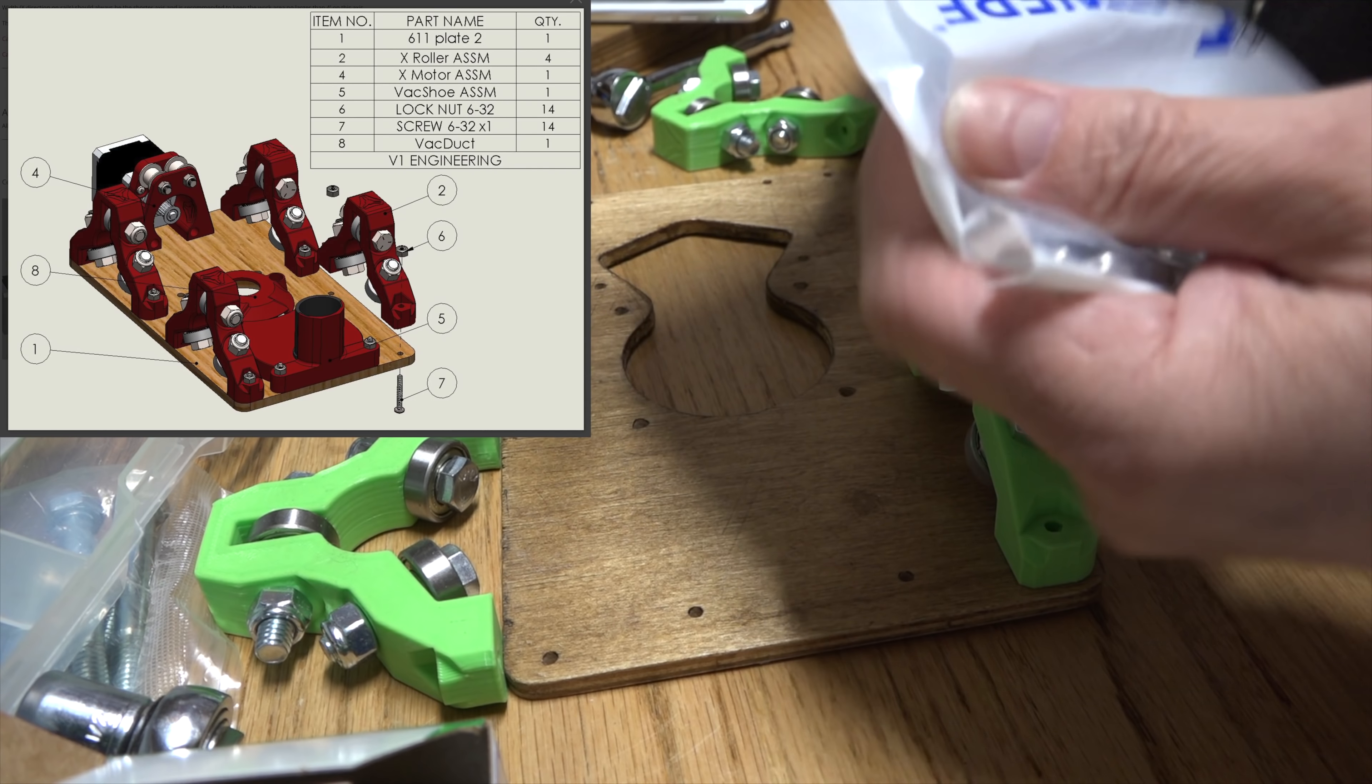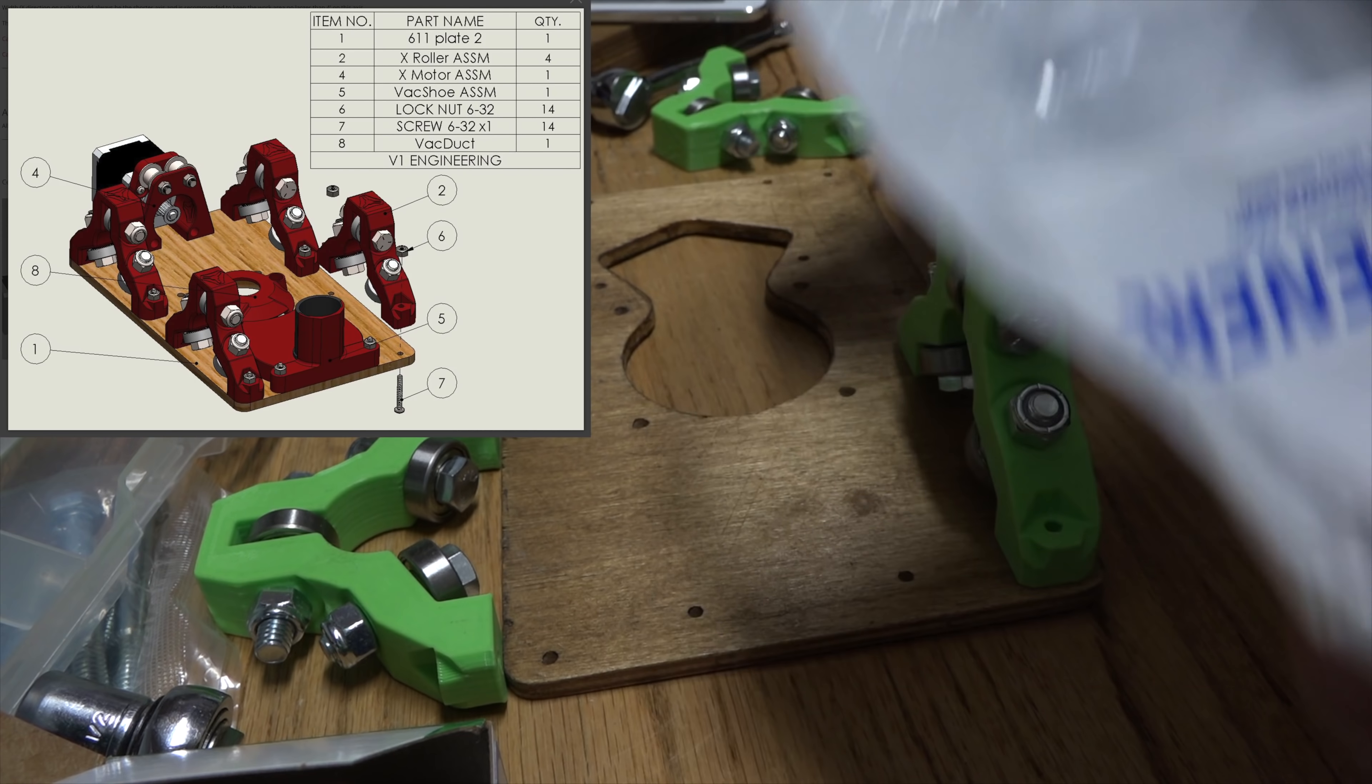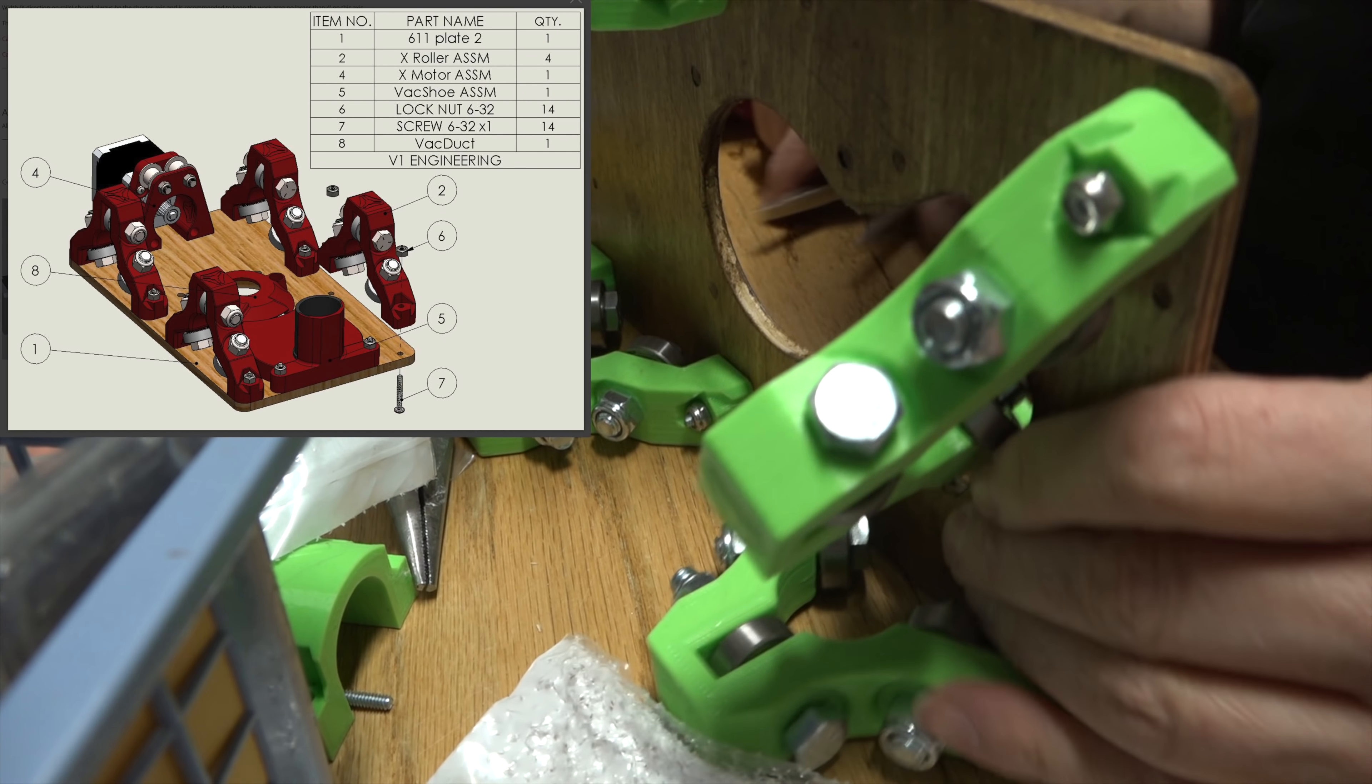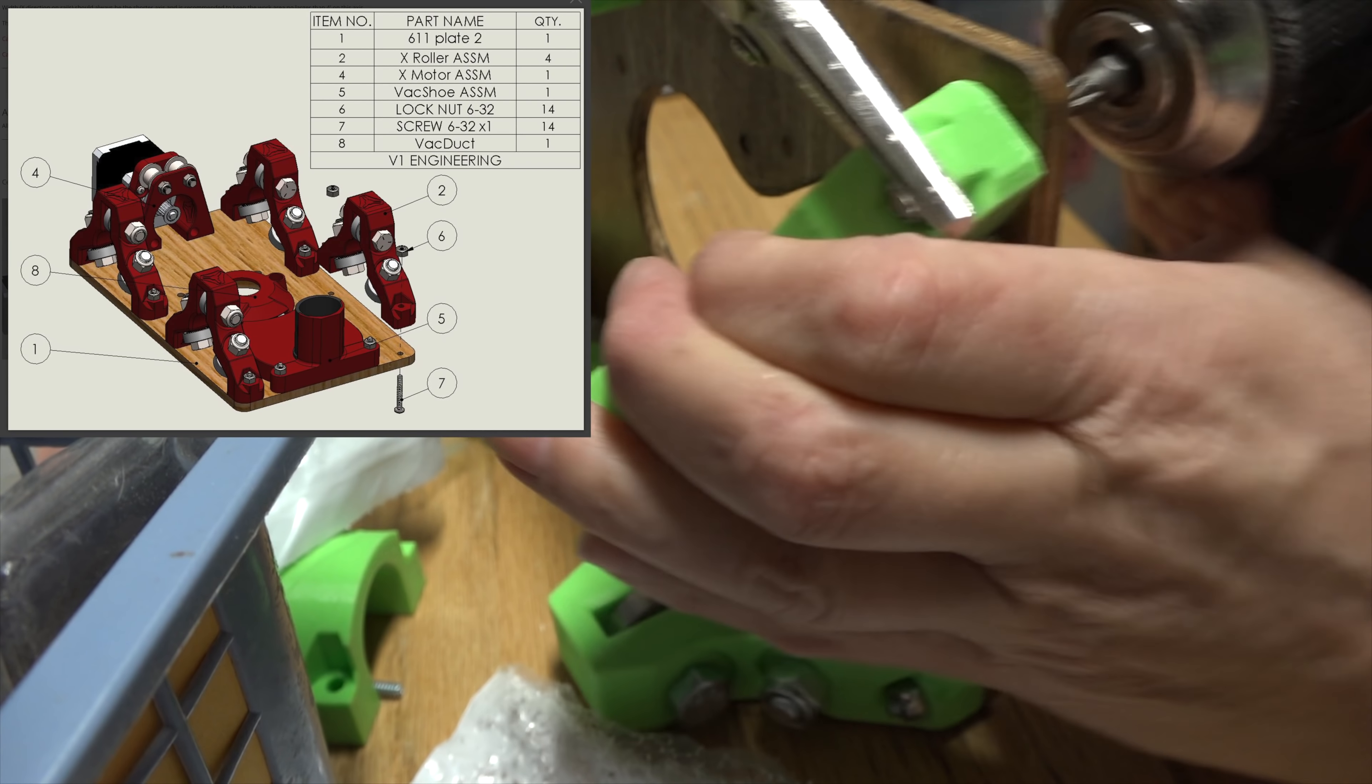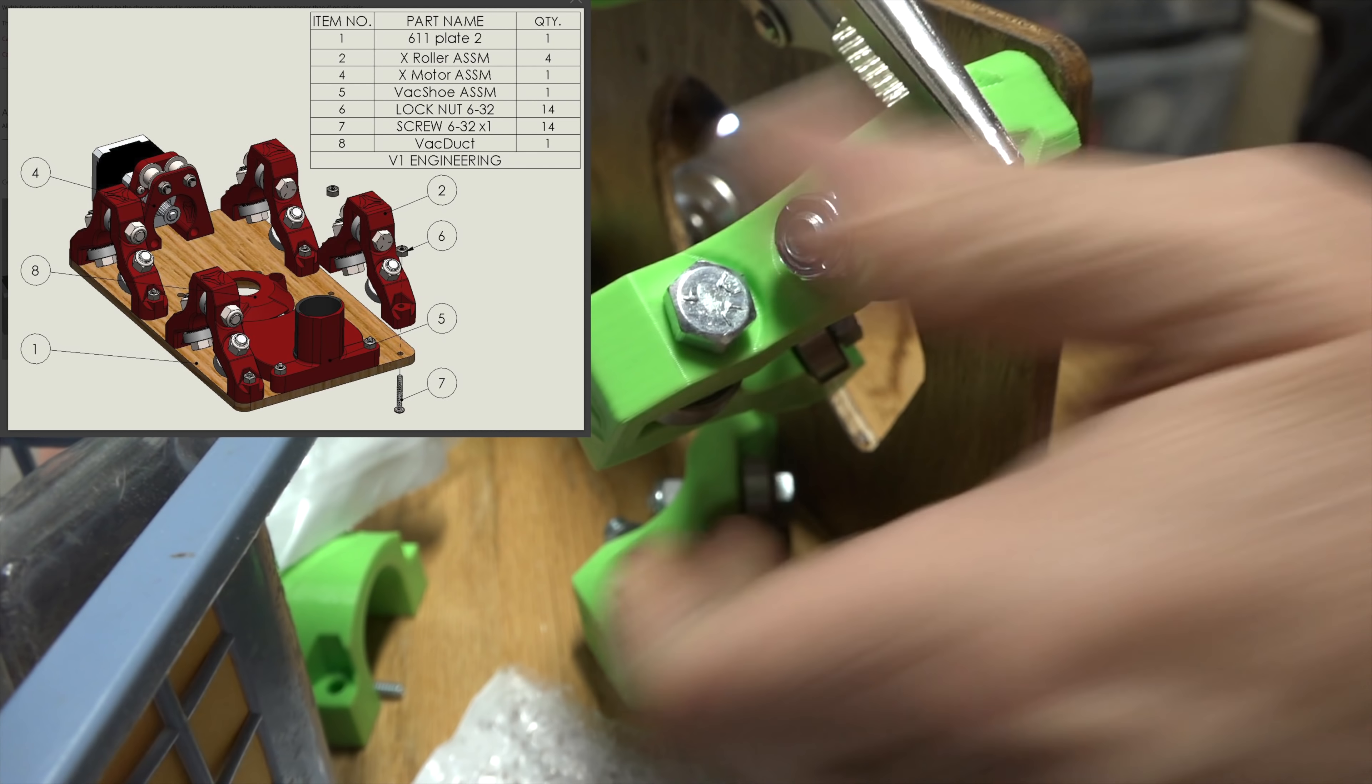I've got some six by 32 lock nuts that I also ordered from Amazon. Looks like the cat likes to chew on plastic. I'll hold this one with the gun, grab these locking pliers, there we go.